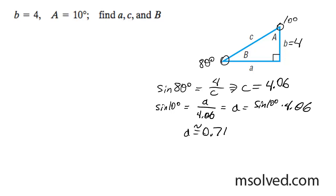So back up here, I'm going to do, so we had angle B, which is equal to 80 degrees, I had side A, which is equal to 0.71, and then side C, which is equal to 4.06, that's it.